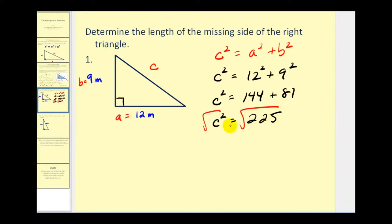225 is a perfect square, so we have C equals 15, in this case meters. That's the length of the missing side.